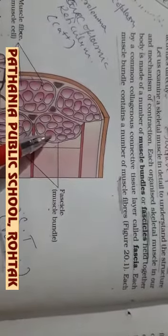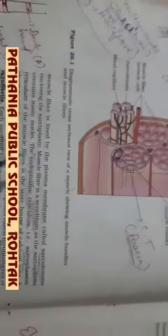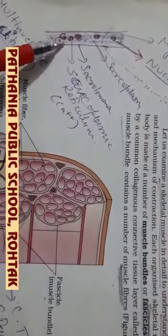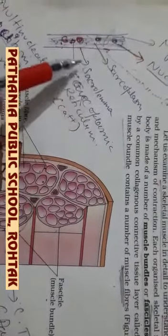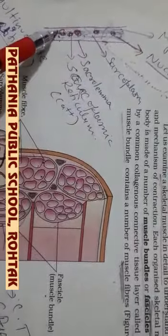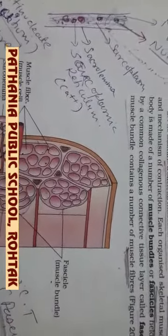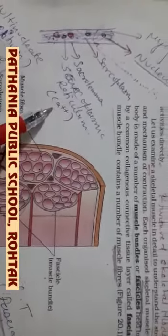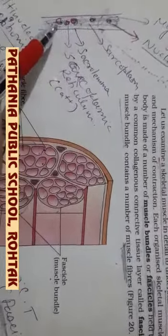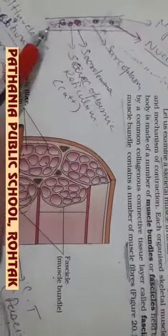Now these muscle bundles are actually made up of muscle fibers. The muscle fibers are bonded by a plasma membrane called sarcolemma, which encloses the cytoplasm called sarcoplasm, in which many nuclei are present — a condition called syncytial condition. The endoplasmic reticulum here is called sarcoplasmic reticulum, which is the storehouse of calcium. The muscle fiber contains many myofibrils or myofilaments running parallel to each other.